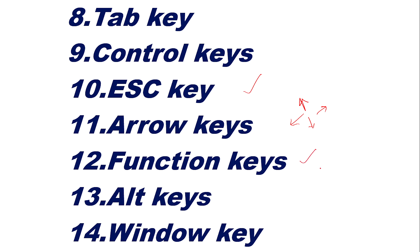Function keys — there are 12 function keys, F1 through F12. With the help of function keys, we can perform many functions. The details will be explained in a separate video. The Alt key is also used to create shortcut keys using combinations of Alt and other buttons.